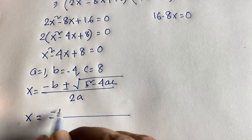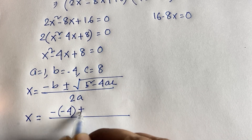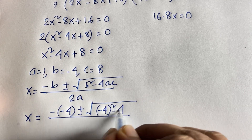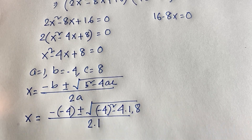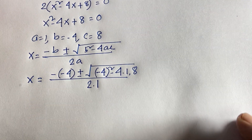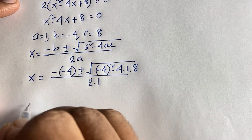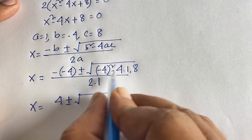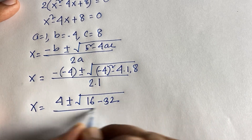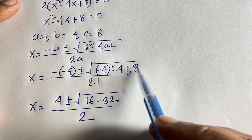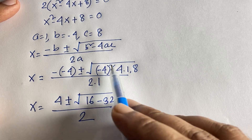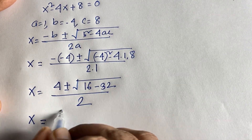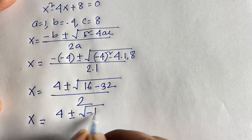Substituting: x equals 4 plus or minus square root of (16 minus 4 times 1 times 8) over 2, which gives x equals 4 plus or minus square root of (16 minus 32) over 2, so x equals 4 plus or minus square root of minus 16, all over 2.